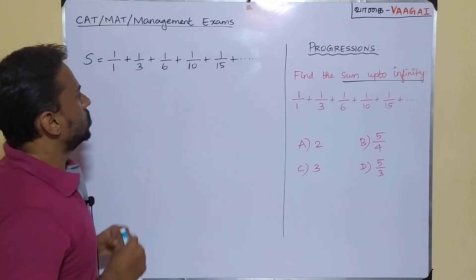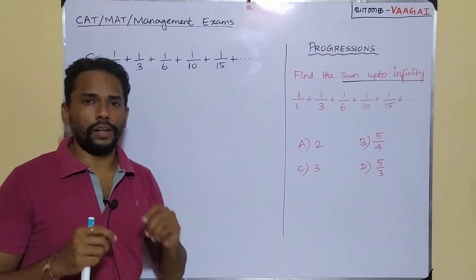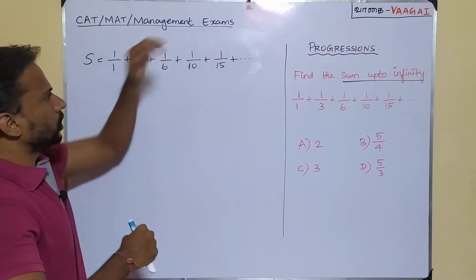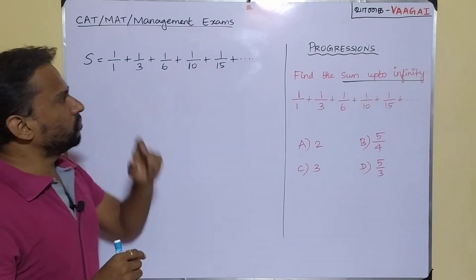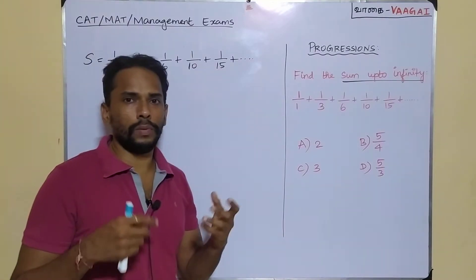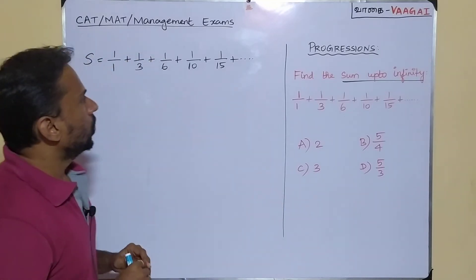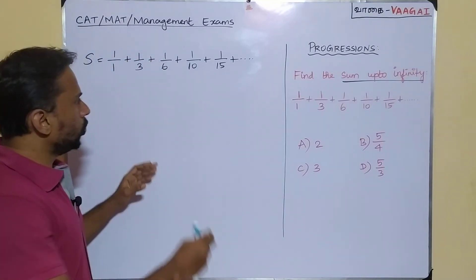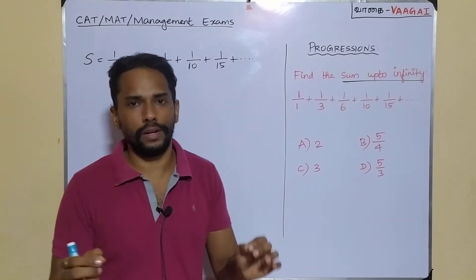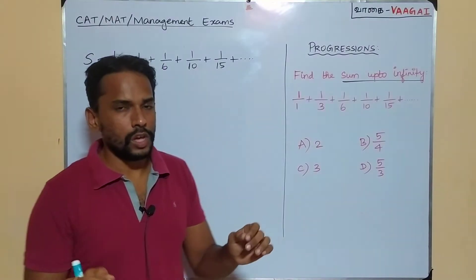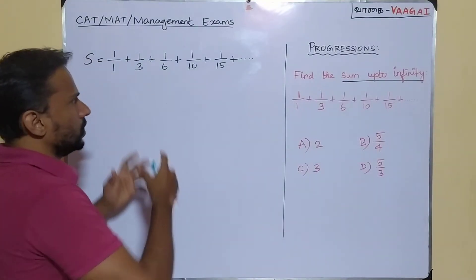All the numerators are 1, so any term is of the form 1 divided by some number. All we need to do is observe the pattern followed in the denominator.